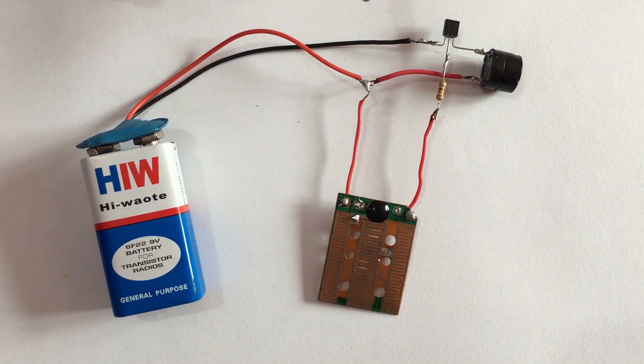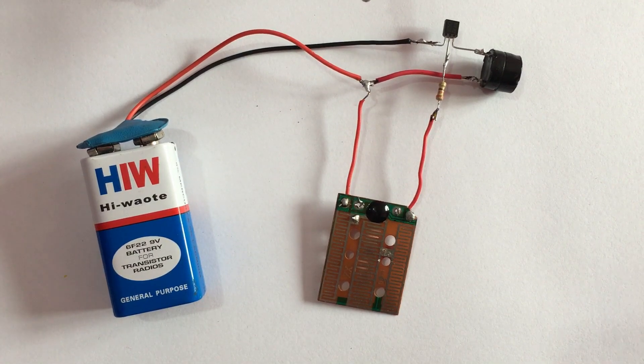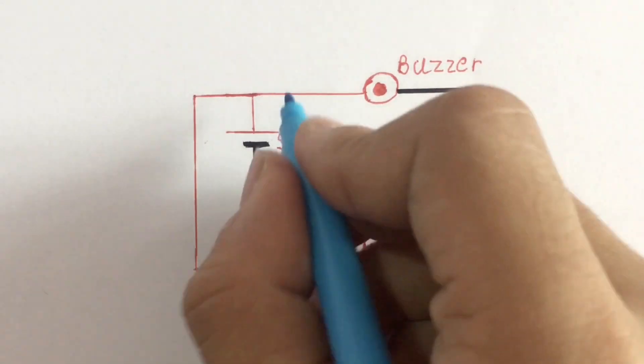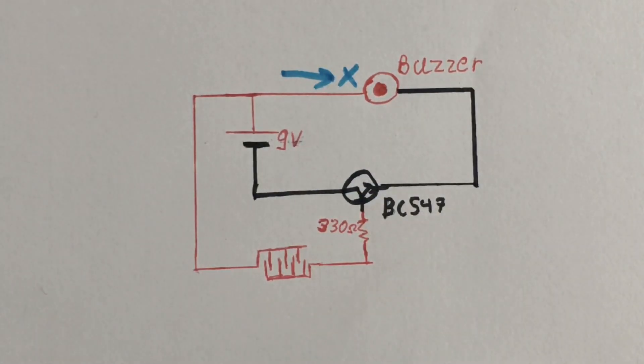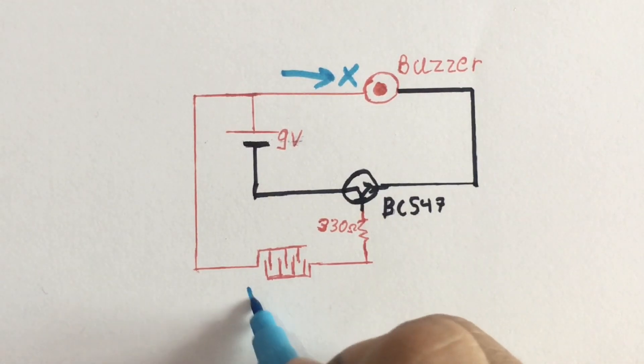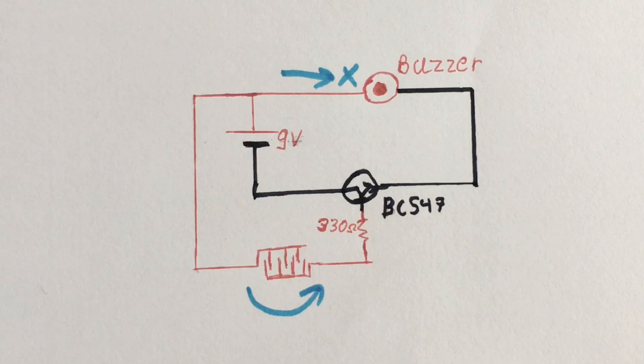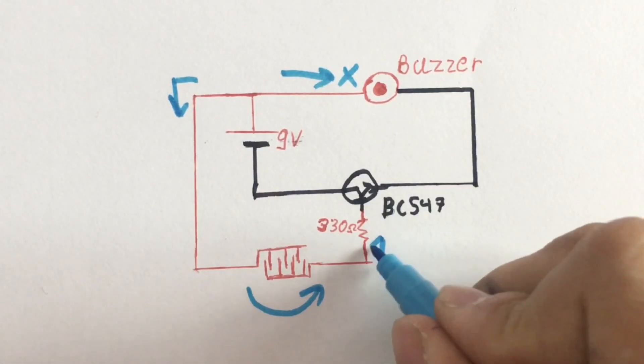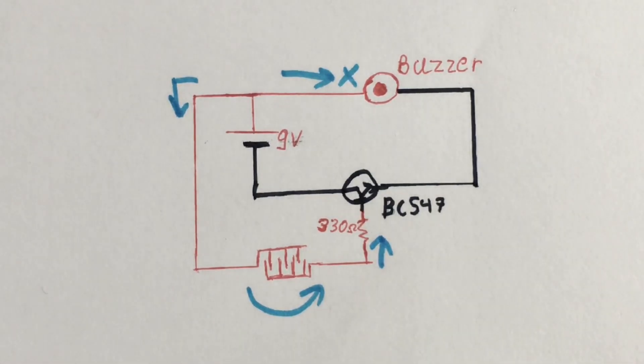Now let's see how our circuit works. Normally no current will flow through the buzzer because our transistor is turned off. When the rain connects two conductors of our board, current passes to the base of the transistor. We are using a 330 ohm resistor in order to limit the current. We don't want our transistor to get really hot.